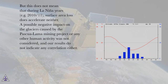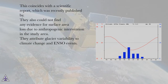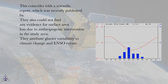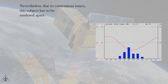A possible negative impact on the glaciers caused by the Pascualama mining project or any other human activity was not considered, and the results do not indicate any correlation either. This coincides with a recently published scientific report, which also could not find any evidence for surface area loss due to anthropogenic intervention in the study area. They attribute glacier variability to climate change and ENSO events. Nevertheless, due to contentious issues, this subject has to be analyzed separately.